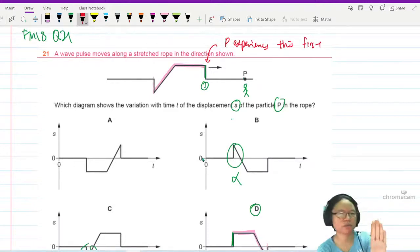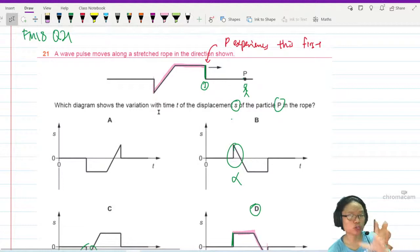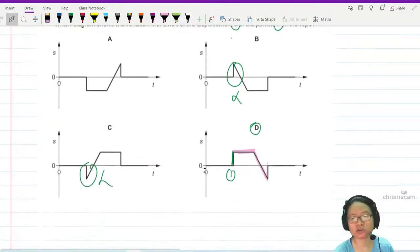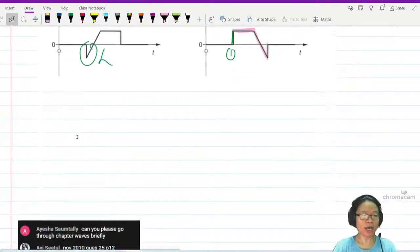So imagine you are standing from the perspective of P and this strange looking wave is coming in your direction. This is what you see first, followed by everything else. So this is what you should see first, followed by everything else. Okay, let's see.